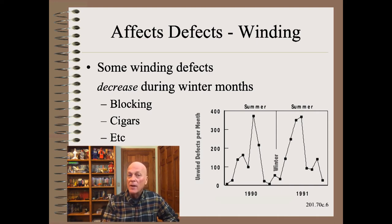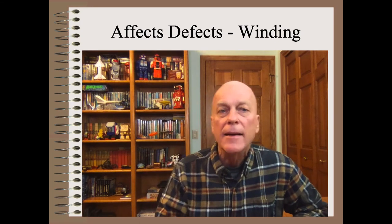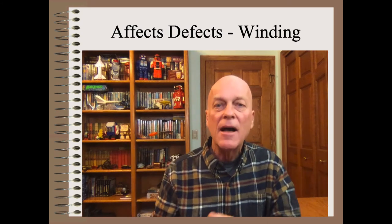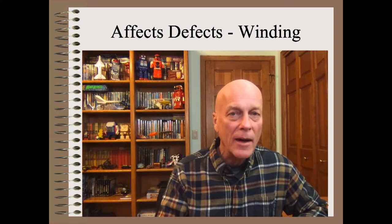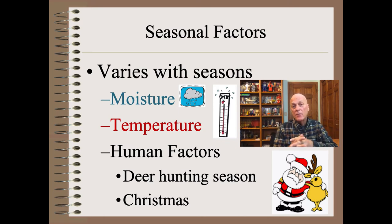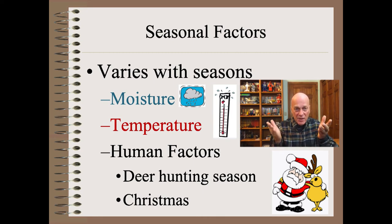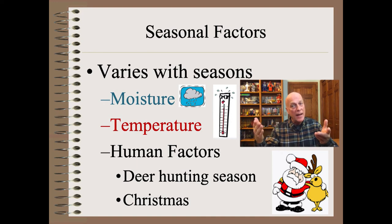Yes, this is a different defect — a winding defect instead of a web break runnability trouble. But the takeaway point is that somehow the environment, or at least seasonality, is having enormous effects on a collection of web and winding troubles. You may be faced with a new defect without much guidance from the literature, and you might look to see if there is any seasonality with that defect over the course of a couple of years. If so, we can narrow down the root cause to moisture, temperature, and yes, human factors.